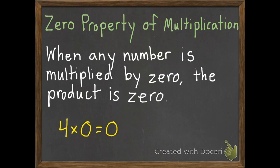So if 4 is multiplied by 0, the product is 0. If 7 is multiplied by 0, the product is 0. So any number multiplied by 0, the product is 0.